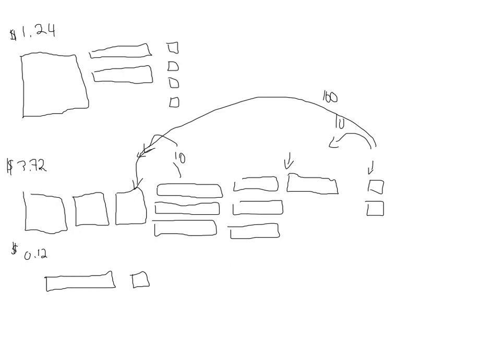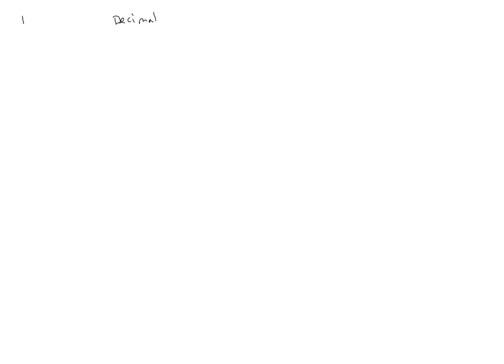The nice thing here is that this is going to lead us into our exploration connecting fractions, decimals, and ultimately percents. So let's flip to the new screen. We're going to do twelve cents and write it different ways. The decimal version: we write that as 0.12. So that's 0.12 dollars.